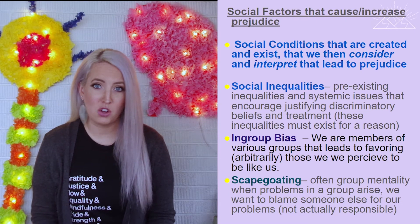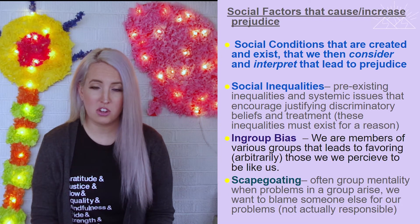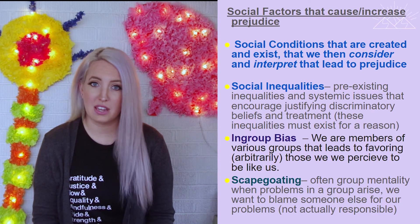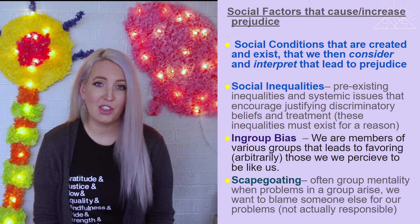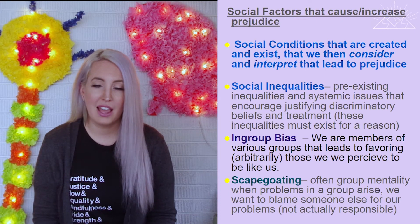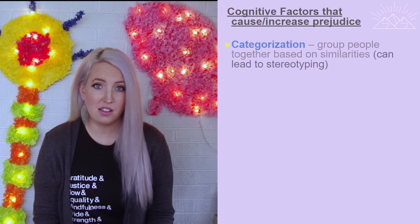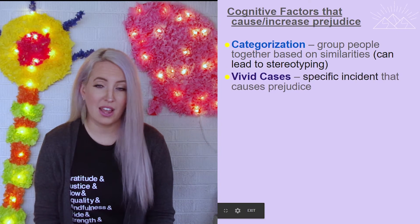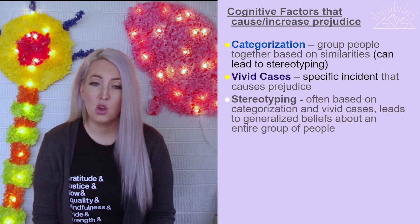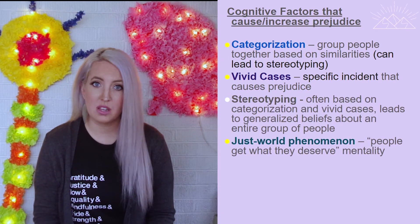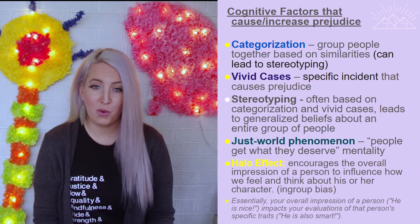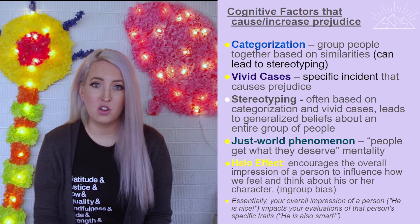We also have cognitive factors to consider — ways that our mind works to organize information that can create prejudice. An example is categorization. We know the human brain likes organization and wants to make sense of the world. Through gestalt psychology, we group things based on proximity or similarity. The first step towards prejudice might just be recognizing what people have in common and grouping them into a category — a schema for groups of individuals.